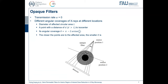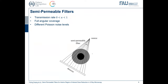As we know, 180 degrees is necessary for a complete reconstruction. However, for semi-permeable filters with transmission rate alpha between zero and one, all points have a full angular coverage. The only difference is that for the filter-affected areas, because of a lower transmitted portion of photon numbers, there will be a higher level of Poisson noise in this region. However, we can apply some denoising methods to reduce this Poisson noise.